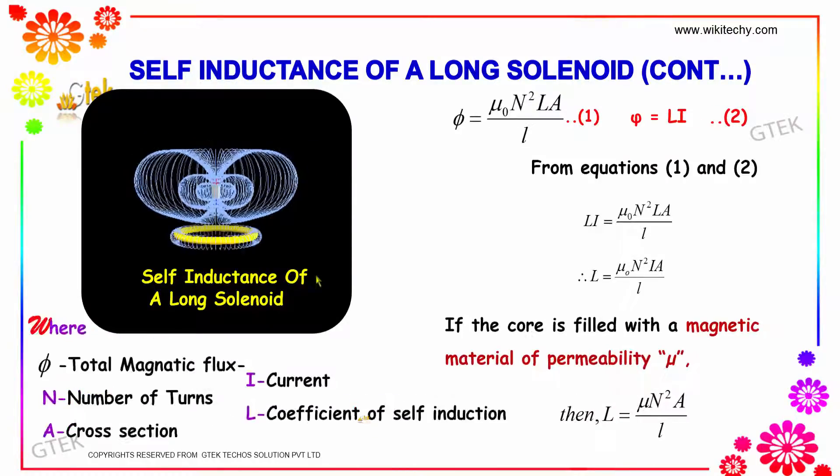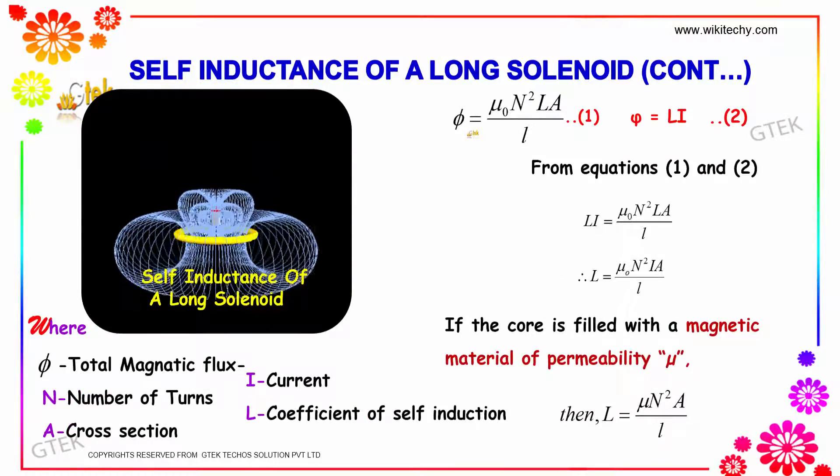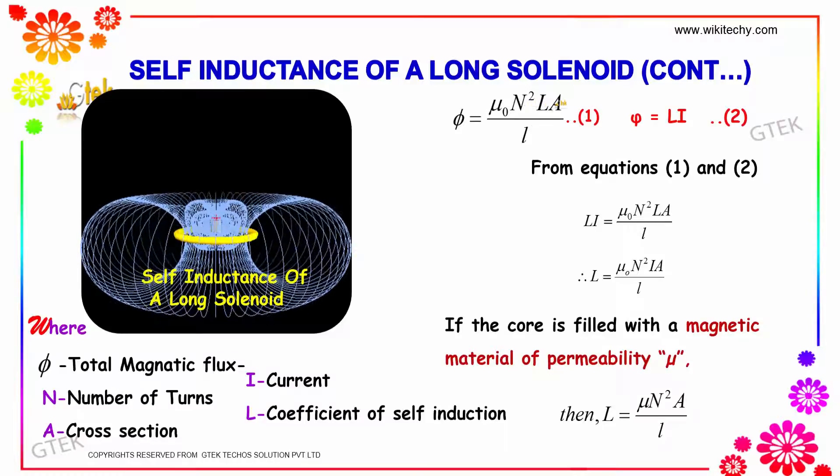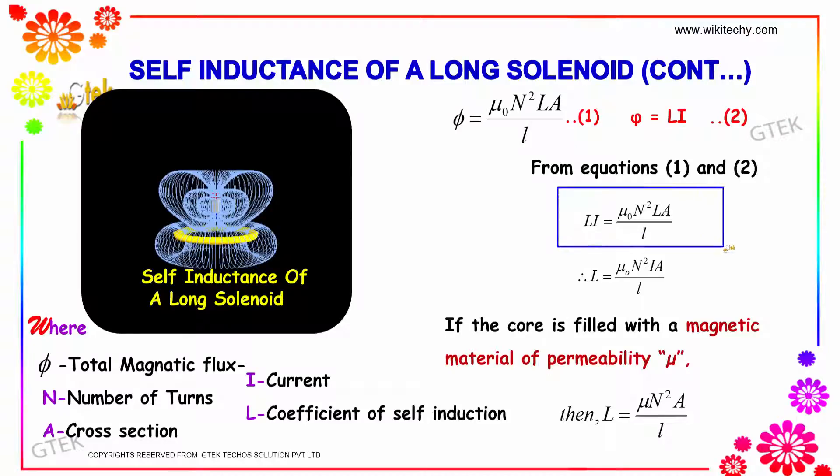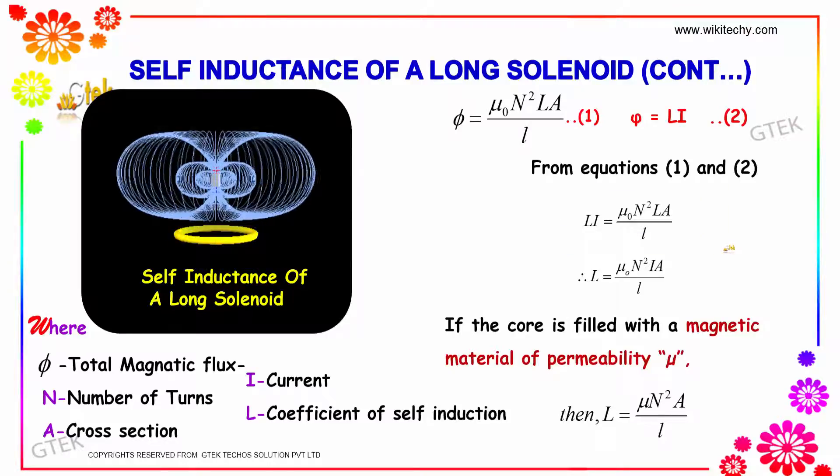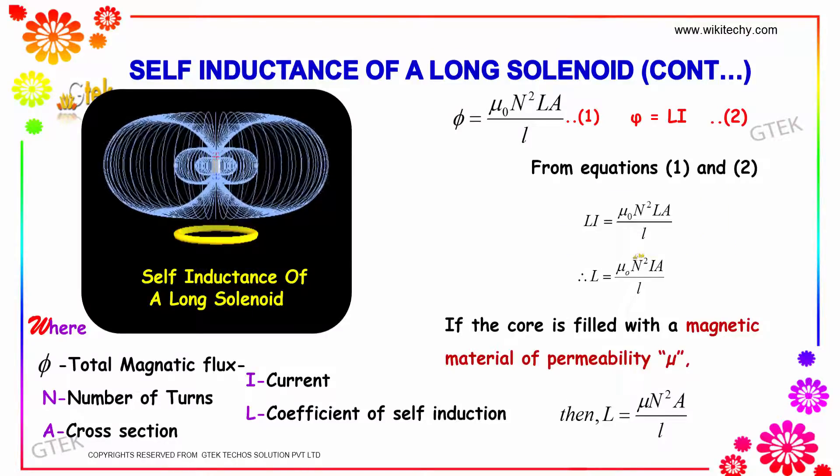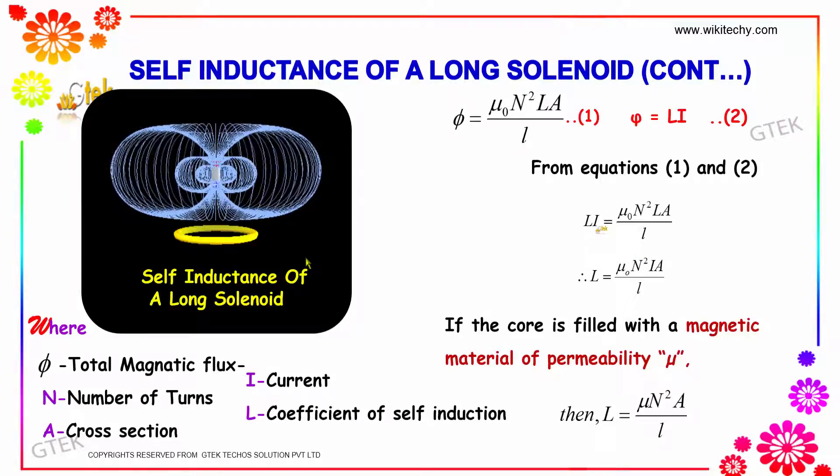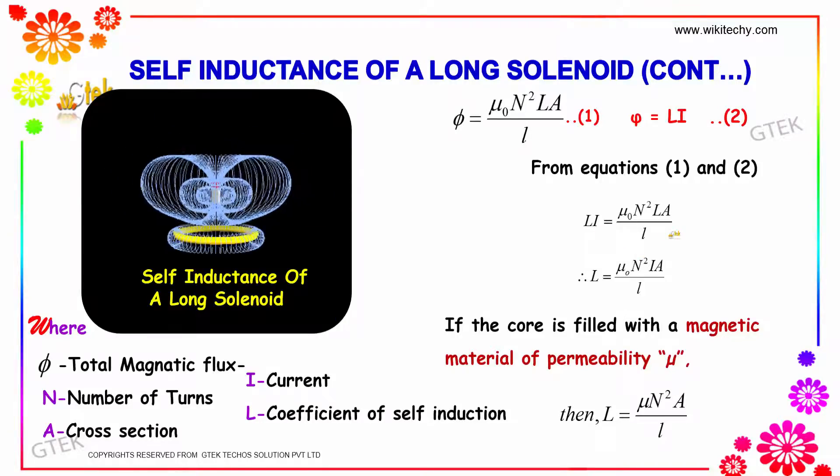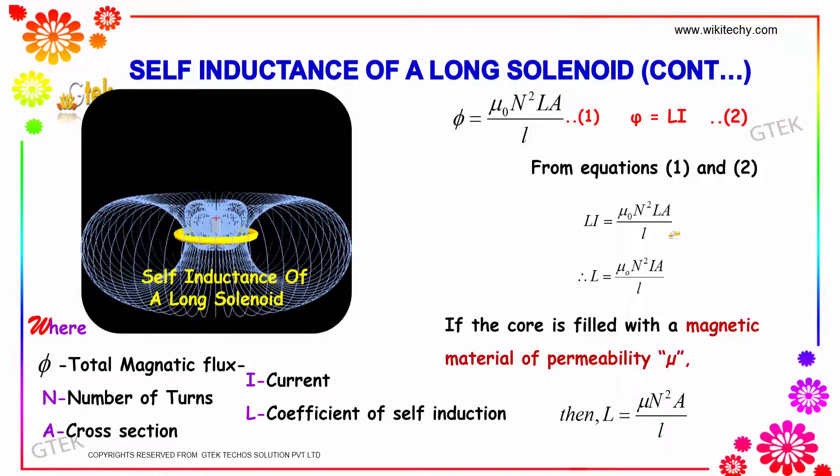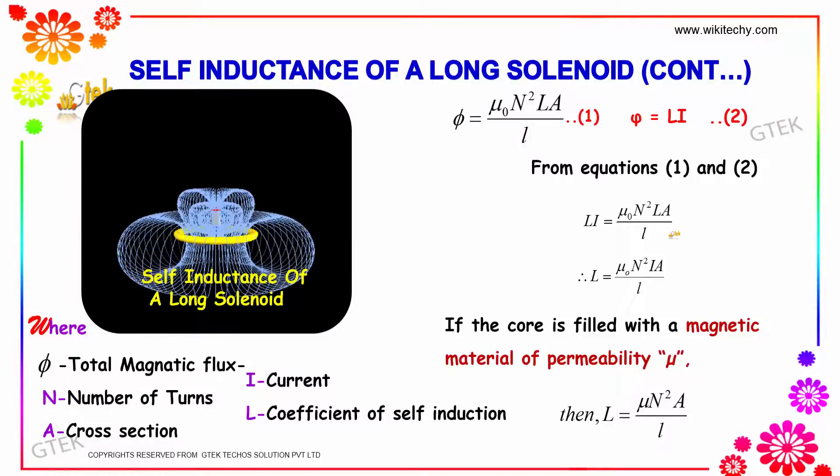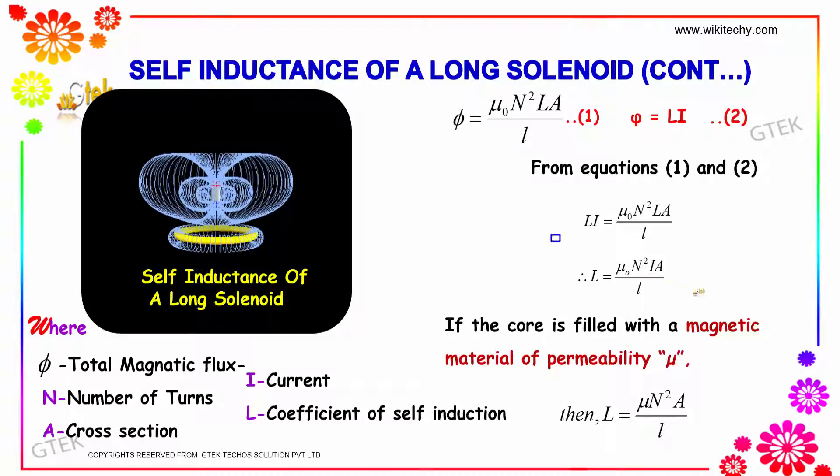Equating the two equations, φ equals μ₀N²IA divided by L and φ equals LI, giving LI equals μ₀N²IA divided by L. Solving for L, we get L equals μ₀N²A divided by L.